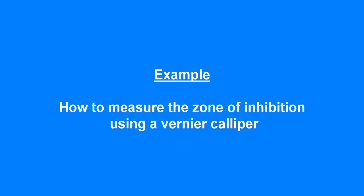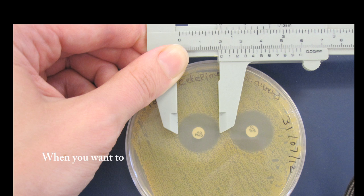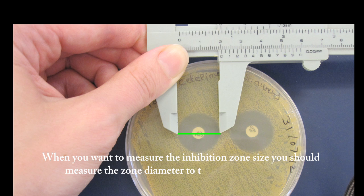How to measure the zone of inhibition using a vernier caliper. When you want to measure the inhibition zone size, you should measure the zone diameter to the edge of the growth.